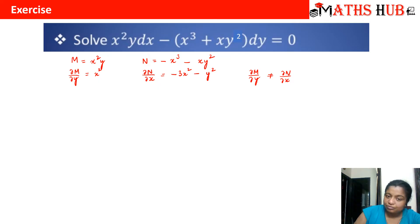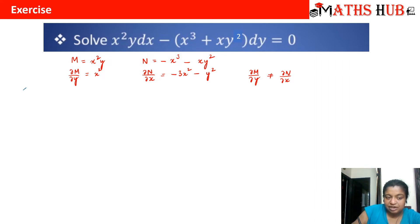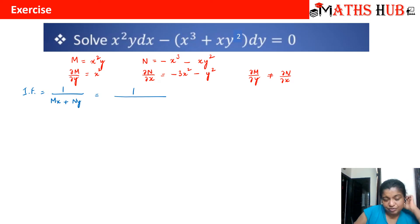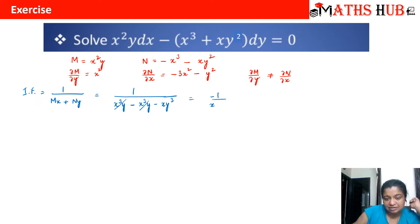Let us check whether M and N are homogeneous in nature — homogeneous means they should have the same degree. M has degree 3, and both terms in N also have degree 3, so yes, it is homogeneous. The integrating factor is therefore 1/(Mx + Ny). Multiplying M by x gives x³y, and adding N times y gives x³y - xy³. These terms cancel, and we get the integrating factor -1/(xy³).